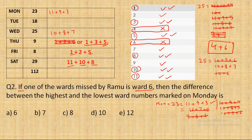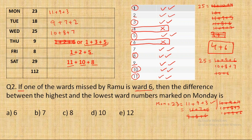The remaining wards — 9, 7, and 2 — must form Tuesday's combination. So Tuesday is 9+7+2. This completes the full table. The question asks for the difference between the highest and lowest ward numbers visited on Monday: that's 11 and 3, giving a difference of 8.